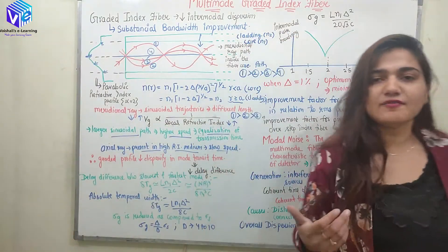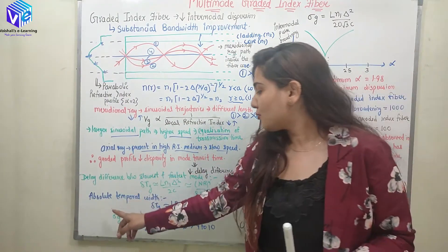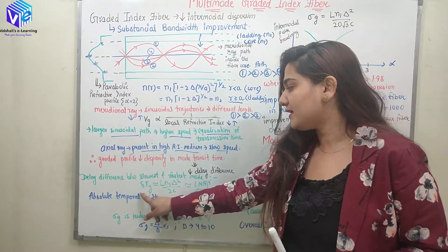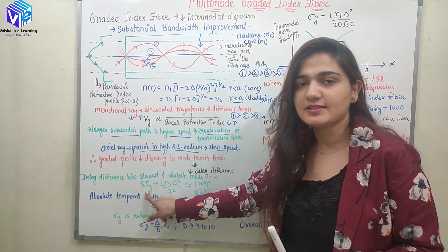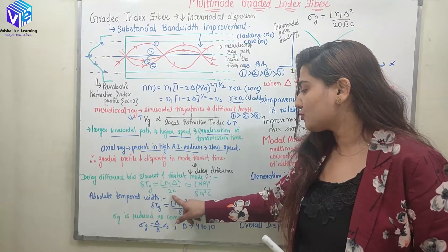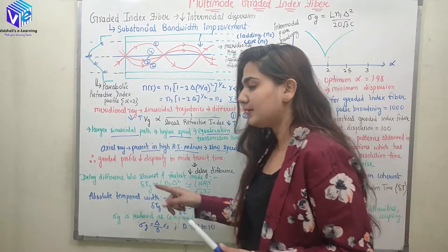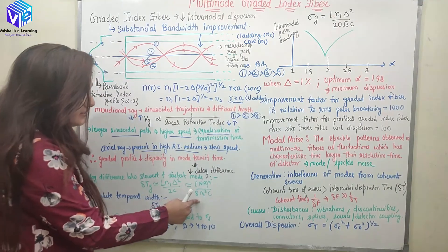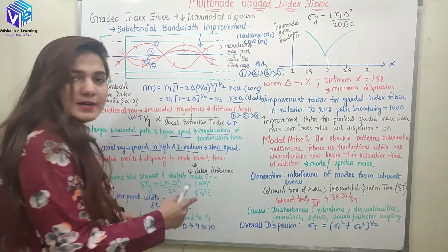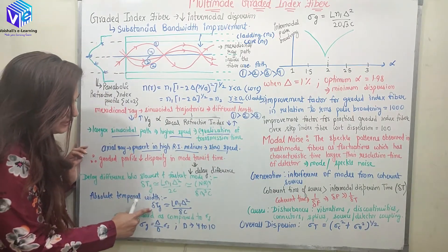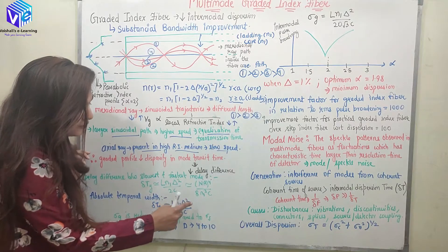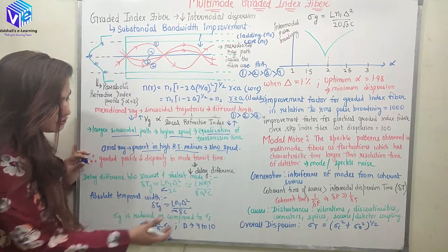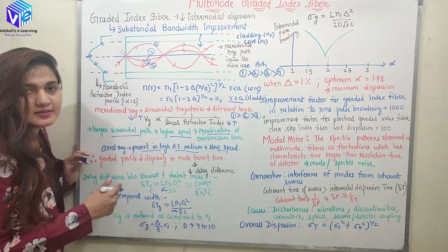The delay difference between the slowest and fastest mode in the graded index fiber, delta_T_G, equals L·N1·delta² / (2C). It is proportional to delta² — the square of the relative refractive index — or can be represented as NA⁴ / (8·N1³·C). The absolute temporal width is delta_T_G = L·N1·delta² / (8C), where we have a factor of 8 instead of 2, which further reduces the delay difference.